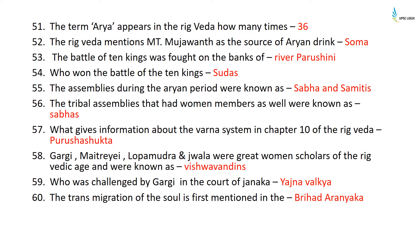The Battle of the Ten Kings was fought on the banks of River Parushini. The winner of the Battle of the Ten Kings was Sudas. The assemblies during the Aryan period were known as Sabha and Samitis. The tribal assemblies that had women members as well were known as Sabhas. Information about the varna system in Chapter 10 of the Rigveda comes from the Purushukta.